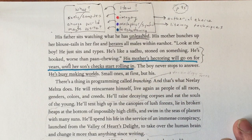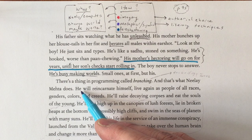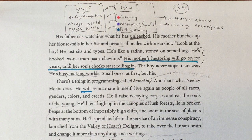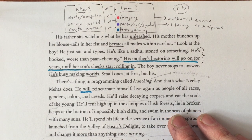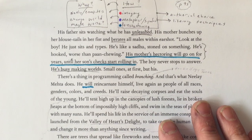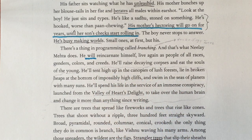'The boy never stops to answer. He's busy making worlds — small ones at first. But there's a thing in programming called branching, and that's what Nile Mehta does.' He will reincarnate himself — 'reincarnate' resonates with the mention of Vishnu later in the text, a Hindu god, and reincarnation is central to Hinduism. 'He will live again as people of all races, genders, colors, creeds. He'll raise decaying corpses and eat the souls of the young. He'll tent high up in the canopies of lush forests.' Here's our imagery.